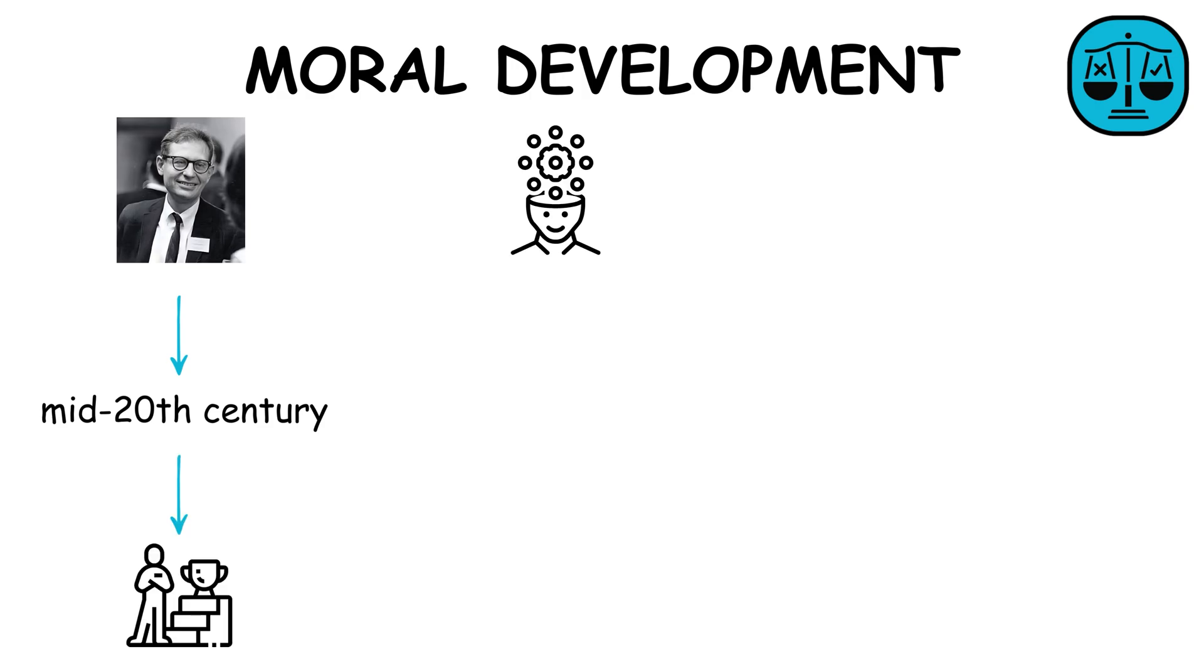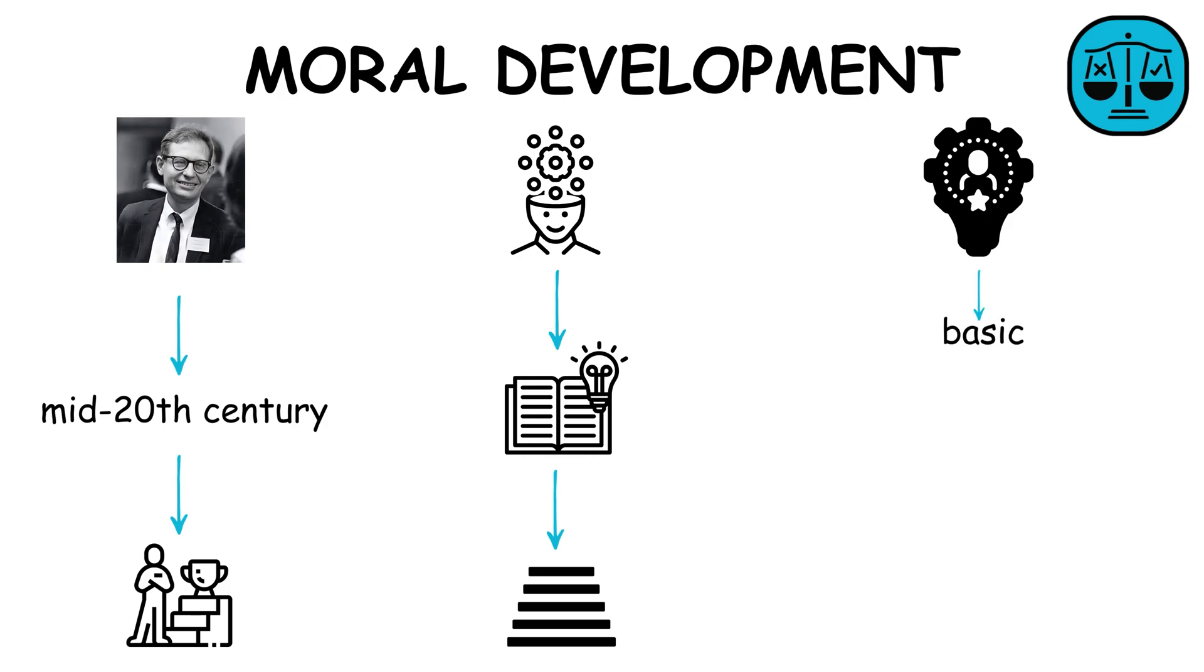Moral Development, studied extensively by Lawrence Kohlberg in the mid-20th century, explores how individuals develop moral reasoning. His theory outlines stages of moral development from basic, concrete understanding of right and wrong to more abstract, principled reasoning.